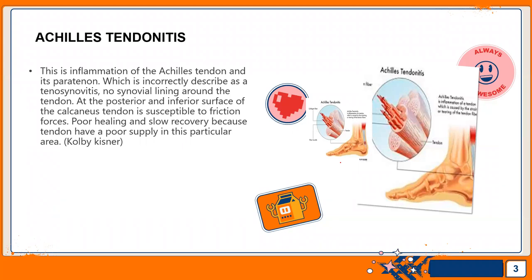What is Achilles tendonitis? This is the inflammation of the Achilles tendon and its peritenon. Peritenon is the layer of the Achilles tendon which is incorrectly described as tenosynovitis. There is no synovial lining around the tendon. At the posterior and inferior surface of the calcaneus, the tendon is susceptible to friction forces, poor healing, and slow recovery because tendon has poor blood supply.